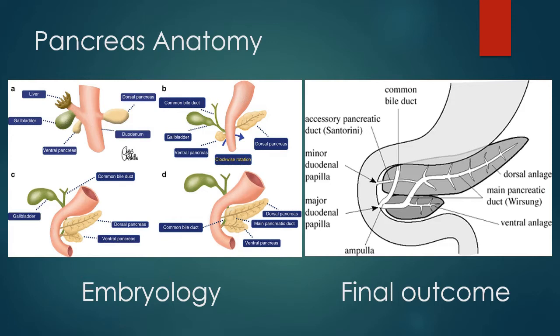Firstly, embryologically, the pancreas develops from two outpouches — the dorsal and ventral pancreatic buds of the endodermal lining of the foregut. The duct of the dorsal pancreas is known as the duct of Santorini, whereas the ventral pancreatic duct is known as the duct of Wirsung.